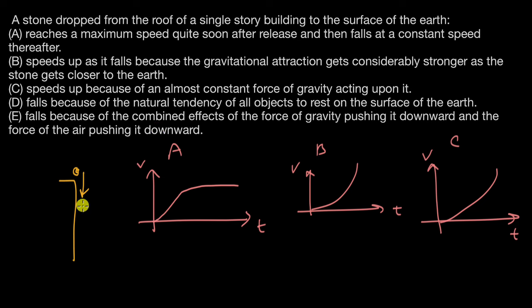Looking at option E: if something is being dropped, there will be air resistance, but it acts in the upward direction, not downward — so E is clearly wrong. Option D says the natural tendency of all objects is to rest on the surface of the earth, but really the natural tendency is to stay in whatever state they are in. If at rest, they stay at rest; if in motion, they continue in motion. So D is also wrong.